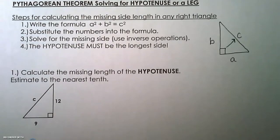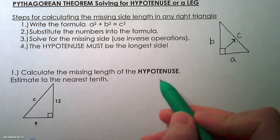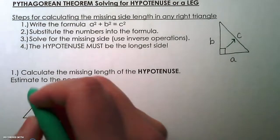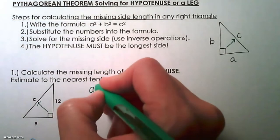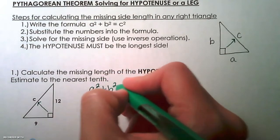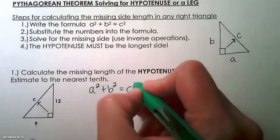So example number one, we're going to calculate the missing length of the hypotenuse. Remember, the hypotenuse is always the side that is opposite the right angle. So we're going to write our formula, a squared plus b squared equals c squared.